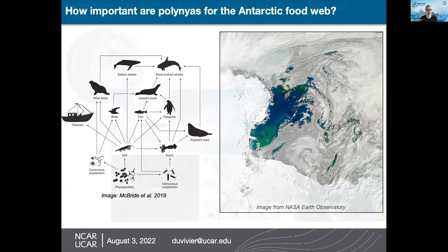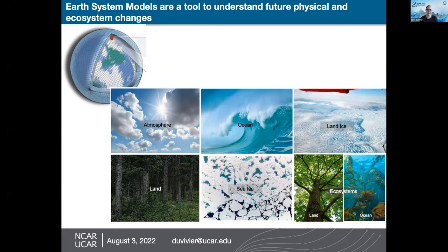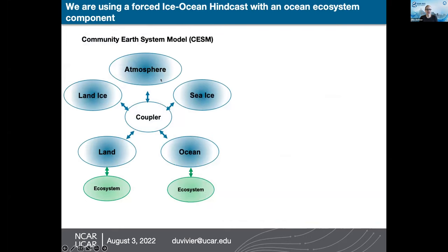The primary tool we're using for this analysis is an Earth System Model, or ESM. An ESM breaks down the globe into different grid boxes and solves numerical equations describing the Earth system in each box — for the atmosphere, ocean, land ice, land model, sea ice, and ecosystem components. This is the Community Earth System Model, or CESM, which includes atmosphere, land ice, land, sea ice, and ocean components.